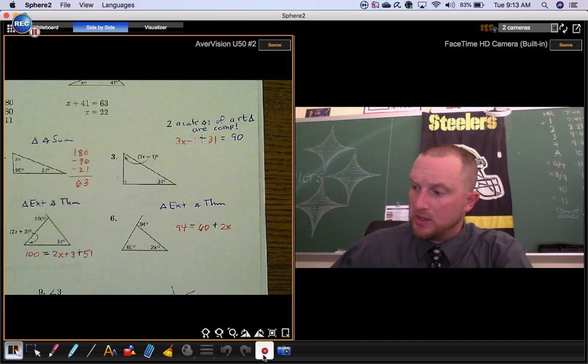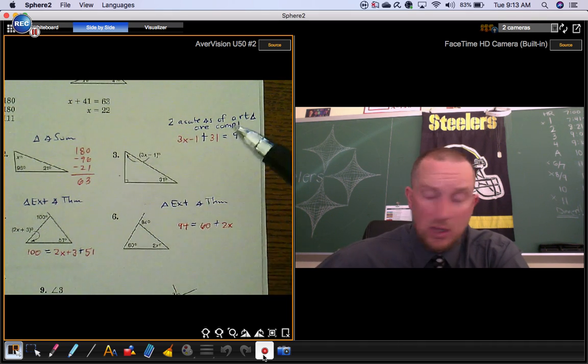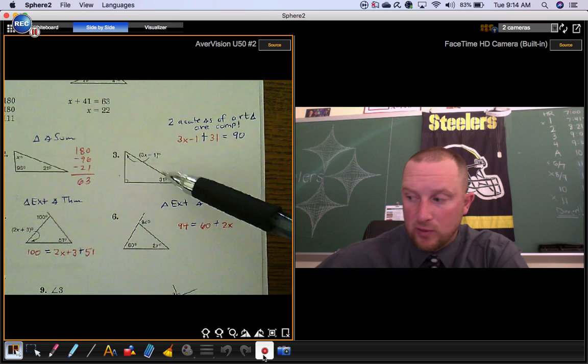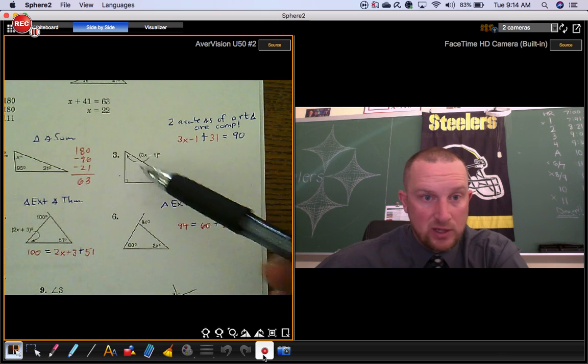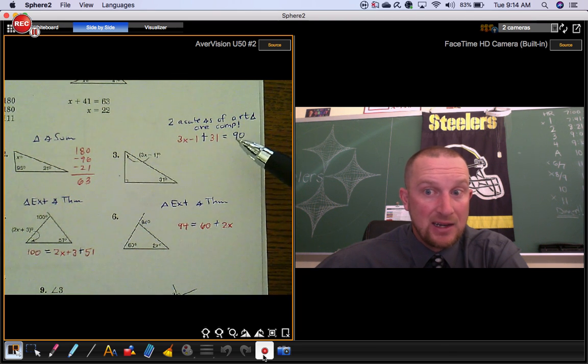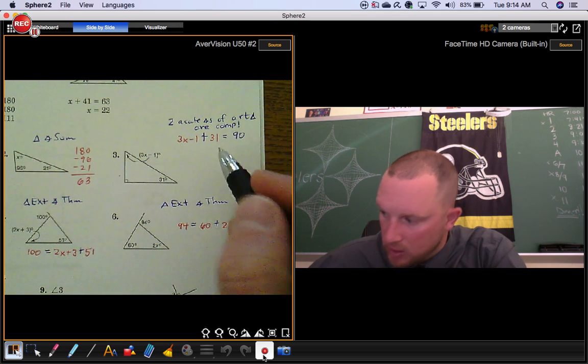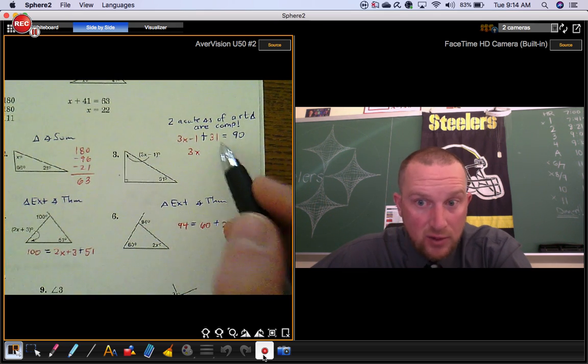Number three is a little bit different—it's a right triangle, and we have a theorem for right triangles. It tells you that the acute angles of a right triangle are complementary. So all you really need to do is add these two angles together because we know they have to add up to the remaining 90 degrees in that triangle. Then you can solve that equation. We have a negative 1 and a positive 31, that gives you 30. Subtract 30 from both sides and divide by 3.